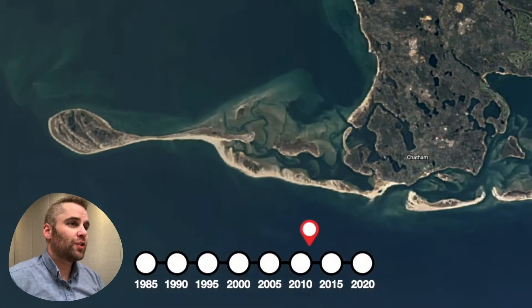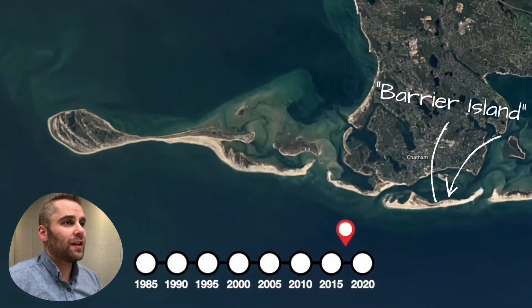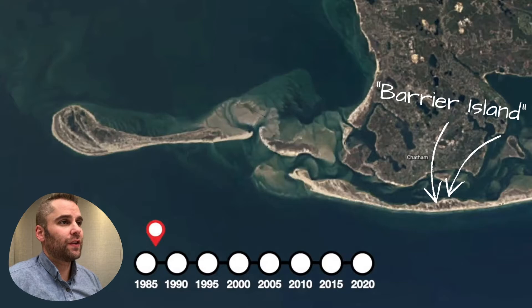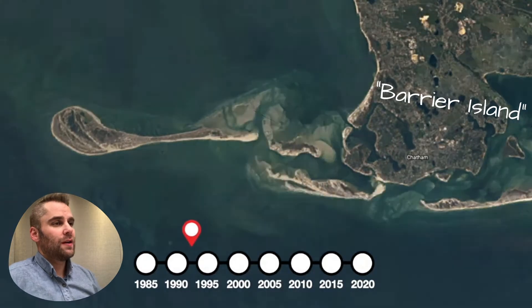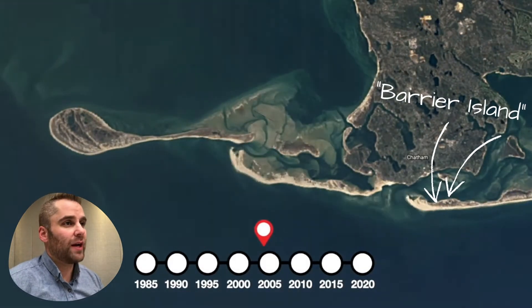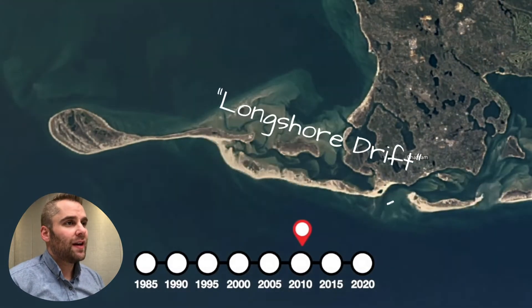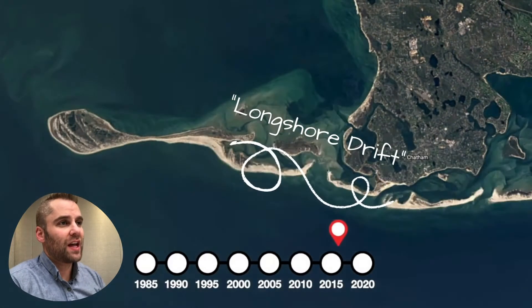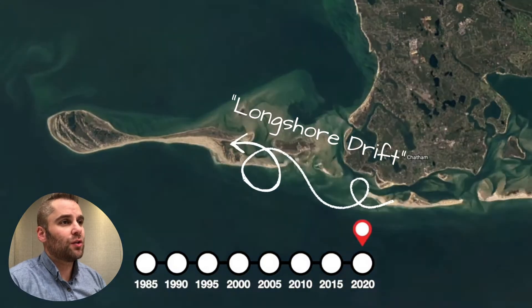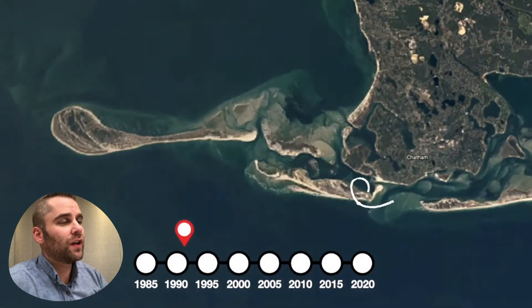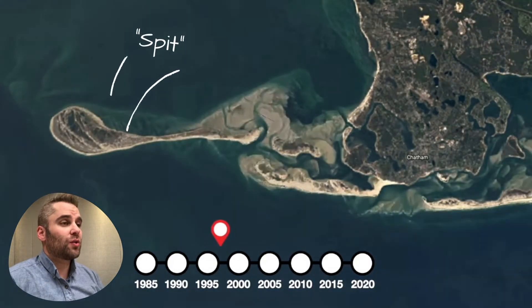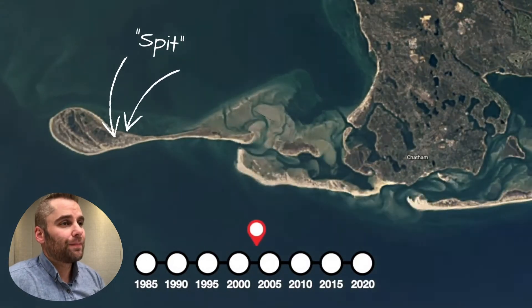On the right side of the video, this conveyor belt of sand has created a barrier island, and that moves sand down to the left side of the video, which creates a spit.